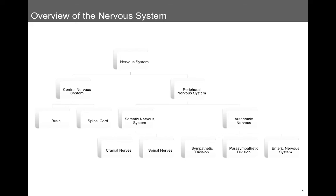Here's a helpful diagram showing the different parts of the nervous system. On the left is the central nervous system — the brain and spinal cord. On the right is the peripheral nervous system, comprised of the somatic nervous system and autonomic nervous system. The somatic nervous system is comprised of cranial nerves and spinal nerves. The autonomic nervous system comprises the sympathetic division, the parasympathetic division, and the enteric nervous system.